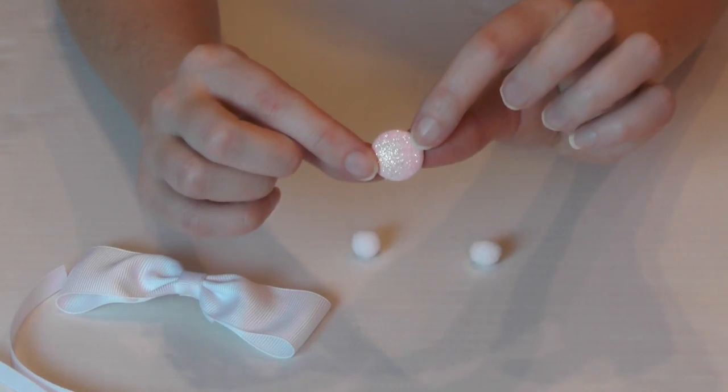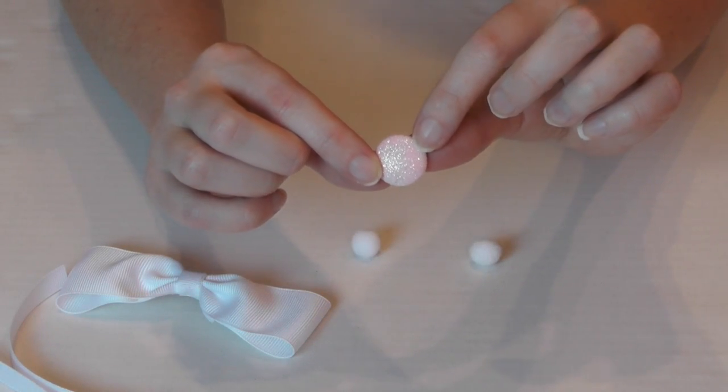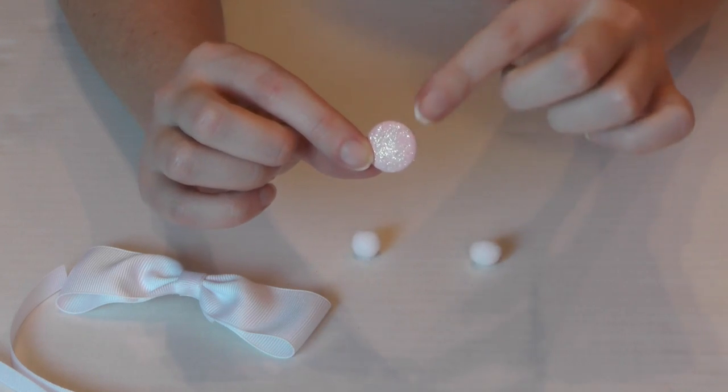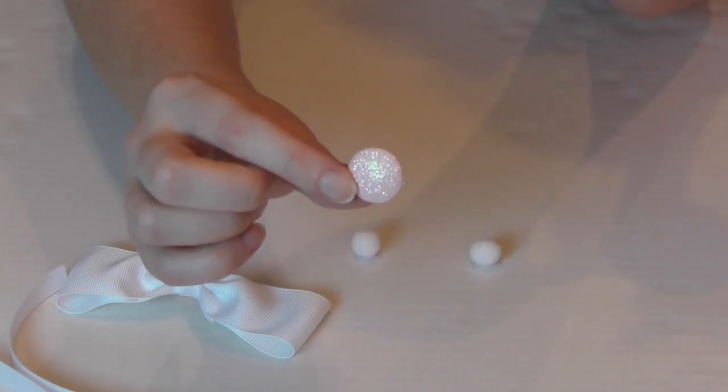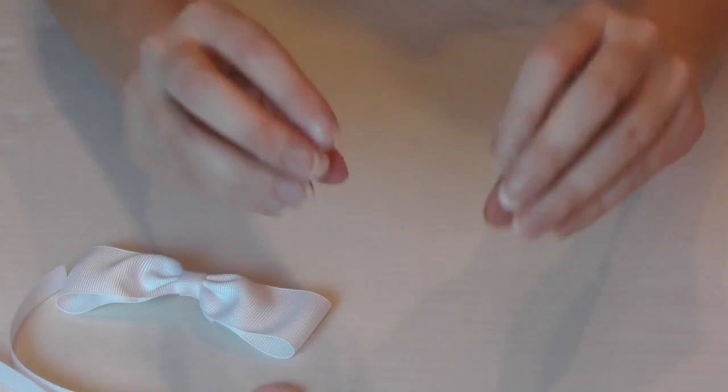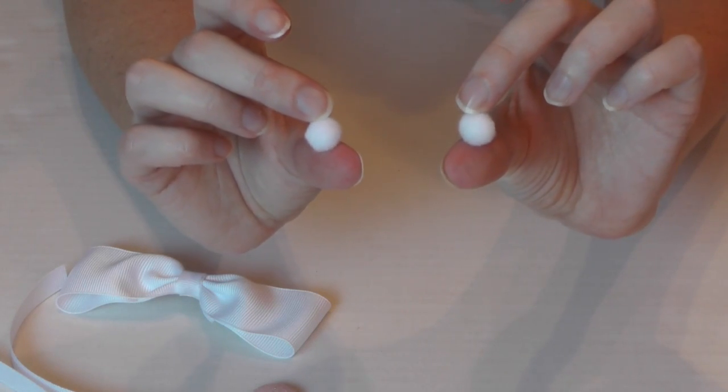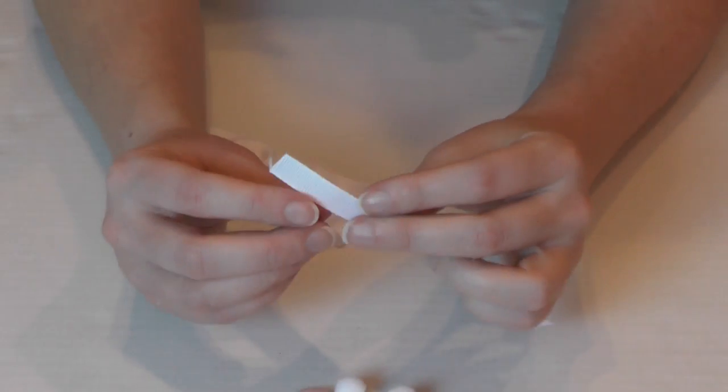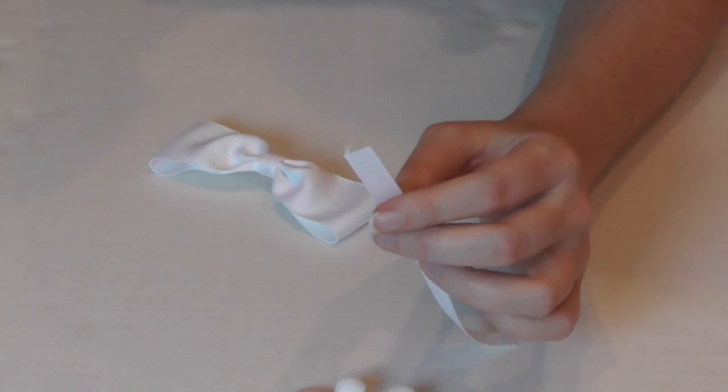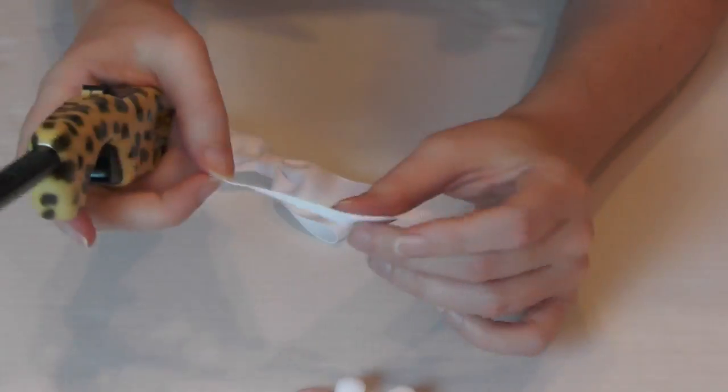I'm also using a glittery pink, this right here, flat back button. And two white pom-poms for its little mouth and nose. All right, really quick, go ahead and heat seal your ribbon ends.